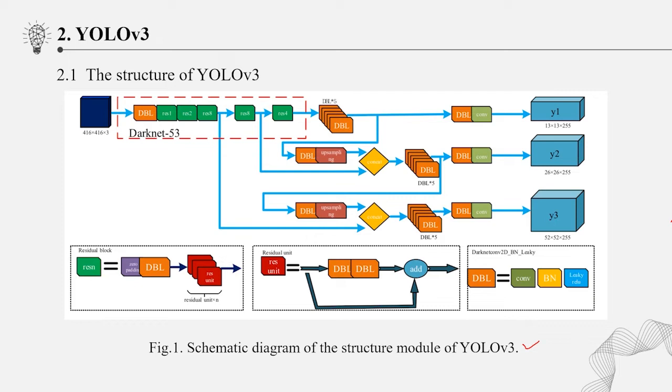In order to reduce the overfitting problem caused by too many layers, YOLOv3 adds a new residual module, which means residual units. In Figure 1, Y1, Y2, and Y3 are characteristic maps of YOLOv3 with three different scales.